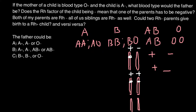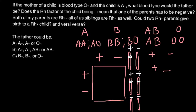We call that situation negative and negative. Let's consider a situation where two parents are both heterozygous for the Rh factor, meaning each has the gene on one chromosome and it is absent on the other. When we cross these two genotypes, we can get: positive homozygous, heterozygous, heterozygous, and negative.